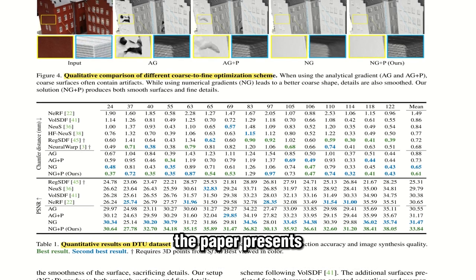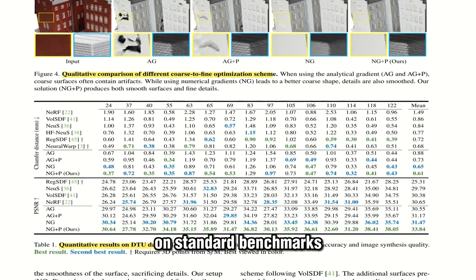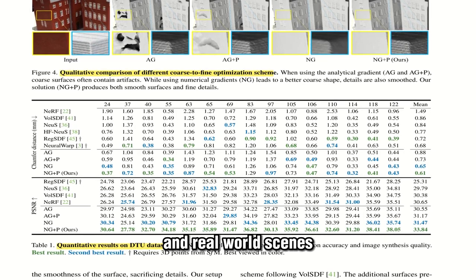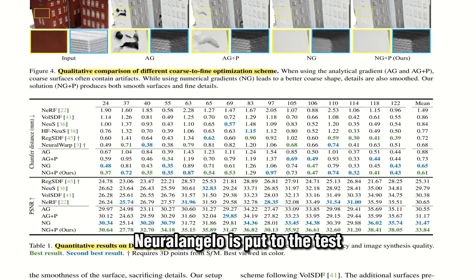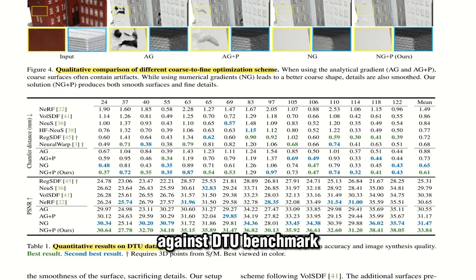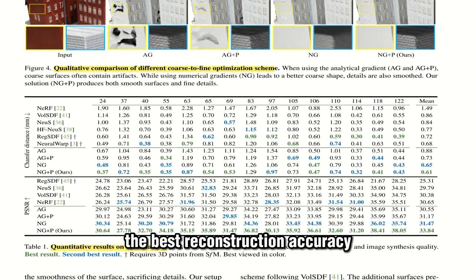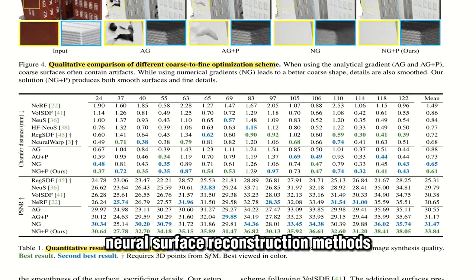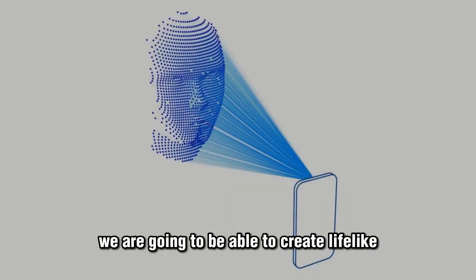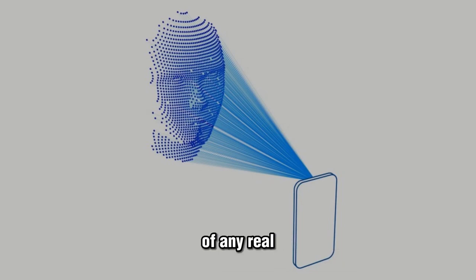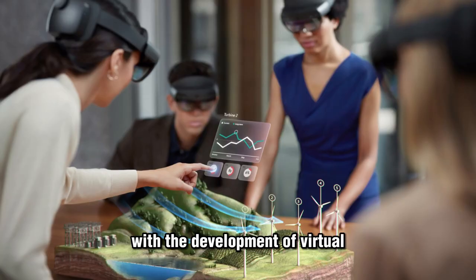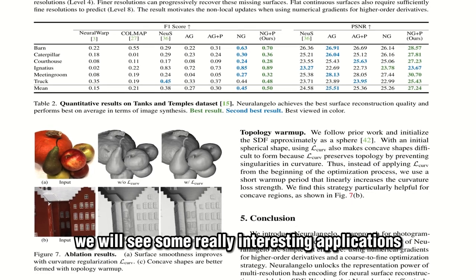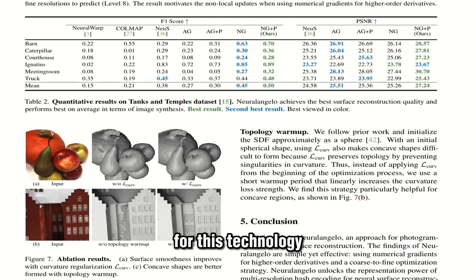The paper presents experimental results on standard benchmarks and real-world scenes. NeuralAngelo is tested against the DTU benchmark, achieving the best reconstruction accuracy and outperforming other image-based neural surface reconstruction methods. In the near future, we are going to be able to create lifelike virtual replicas of any real-world object, and with the development of virtual and augmented reality, we will see some really interesting applications for this technology.